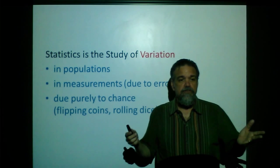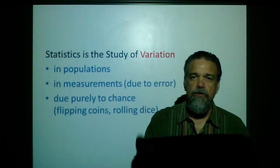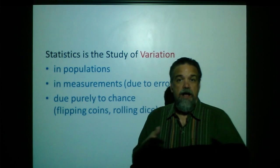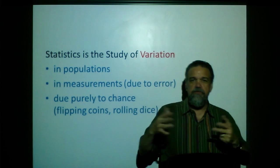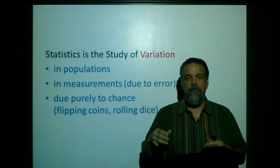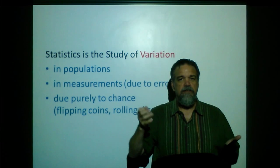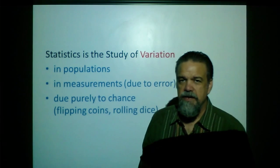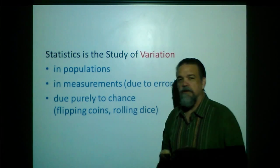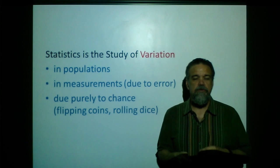And then sometimes there's variation due purely to chance. If I roll a die over and over, I'm going to get sometimes a six, sometimes a two, sometimes a three. If I flip a coin, I'll get different heads or tails. If I pick a card out of a deck, I'll get a different card each time. These are natural variations due purely to chance.